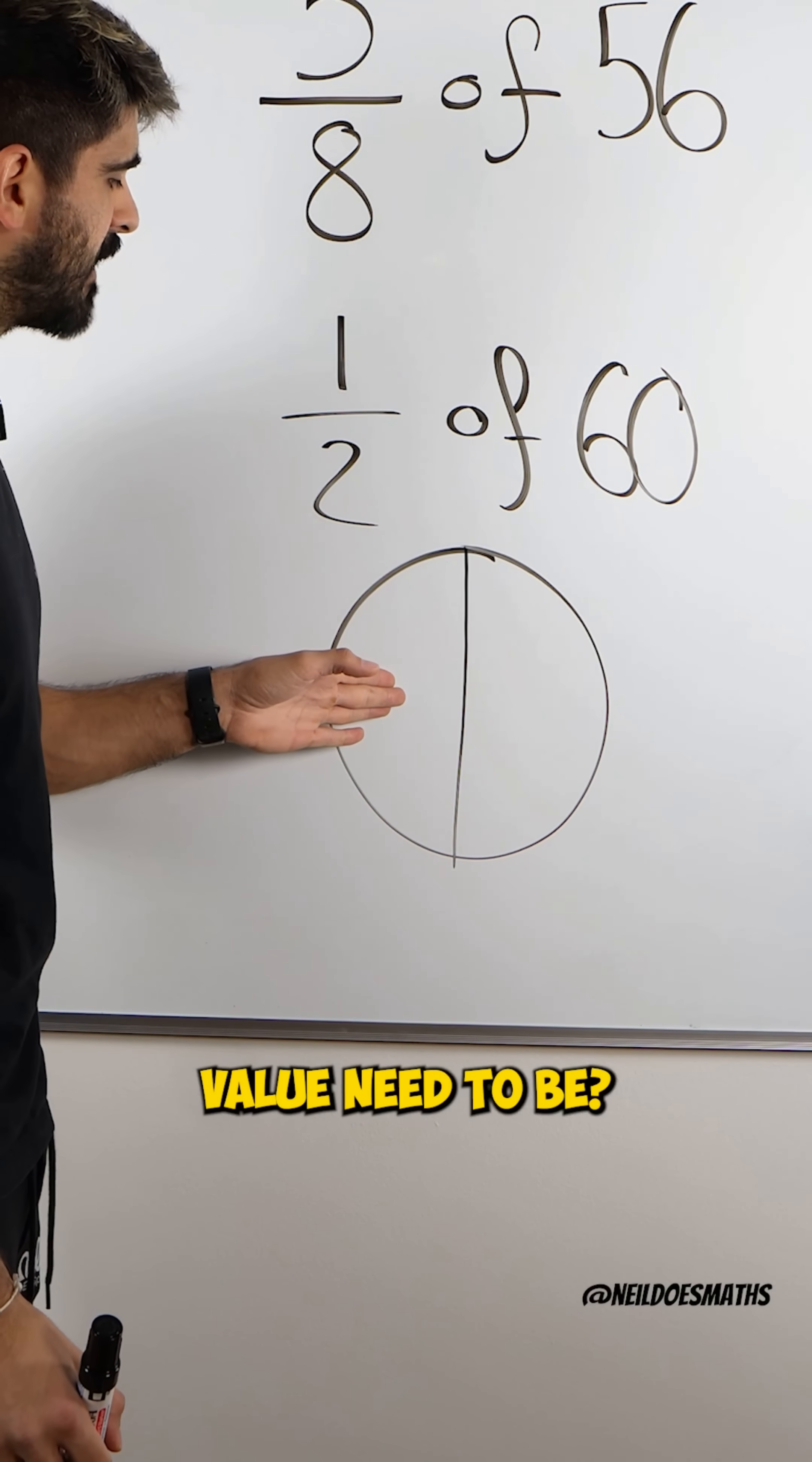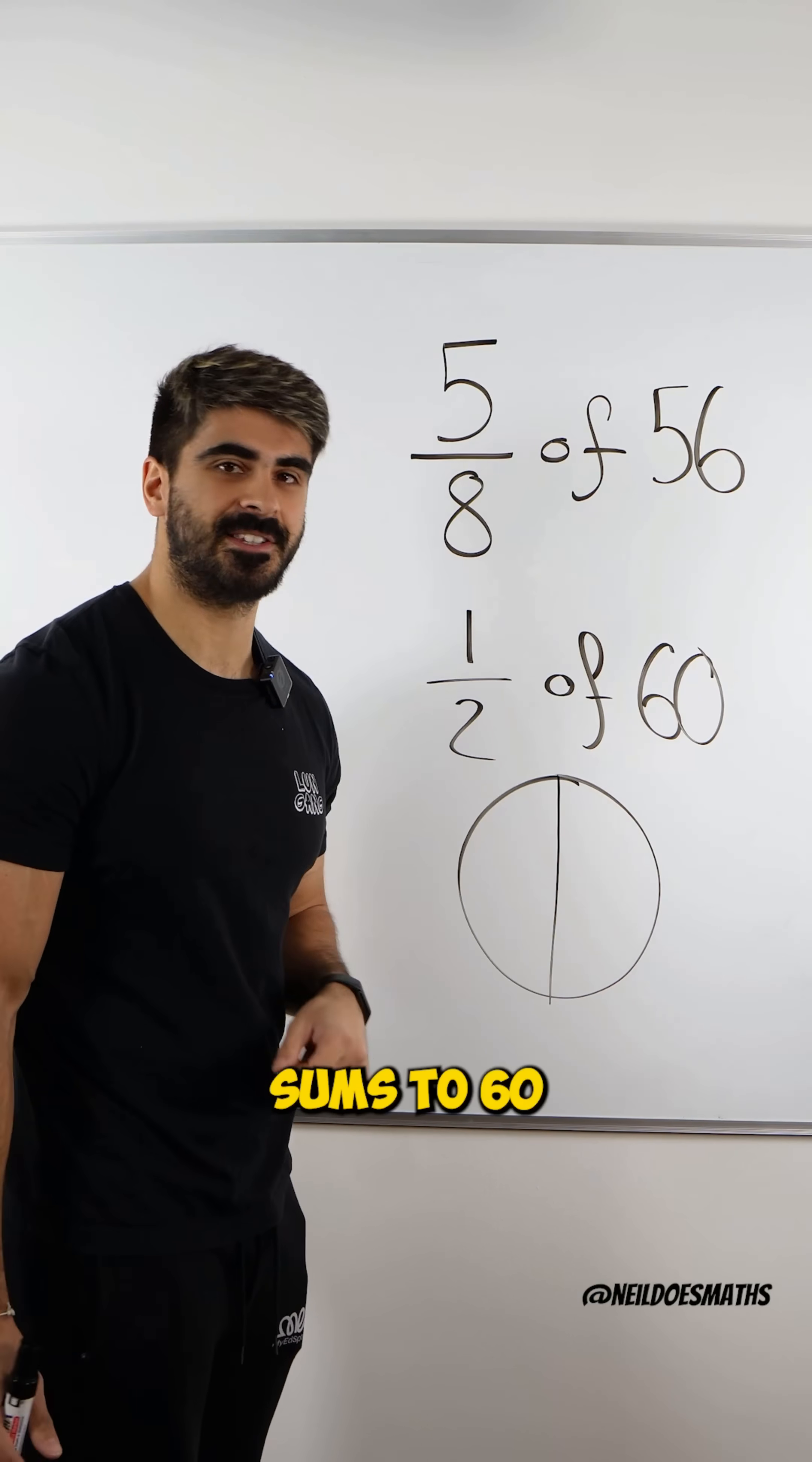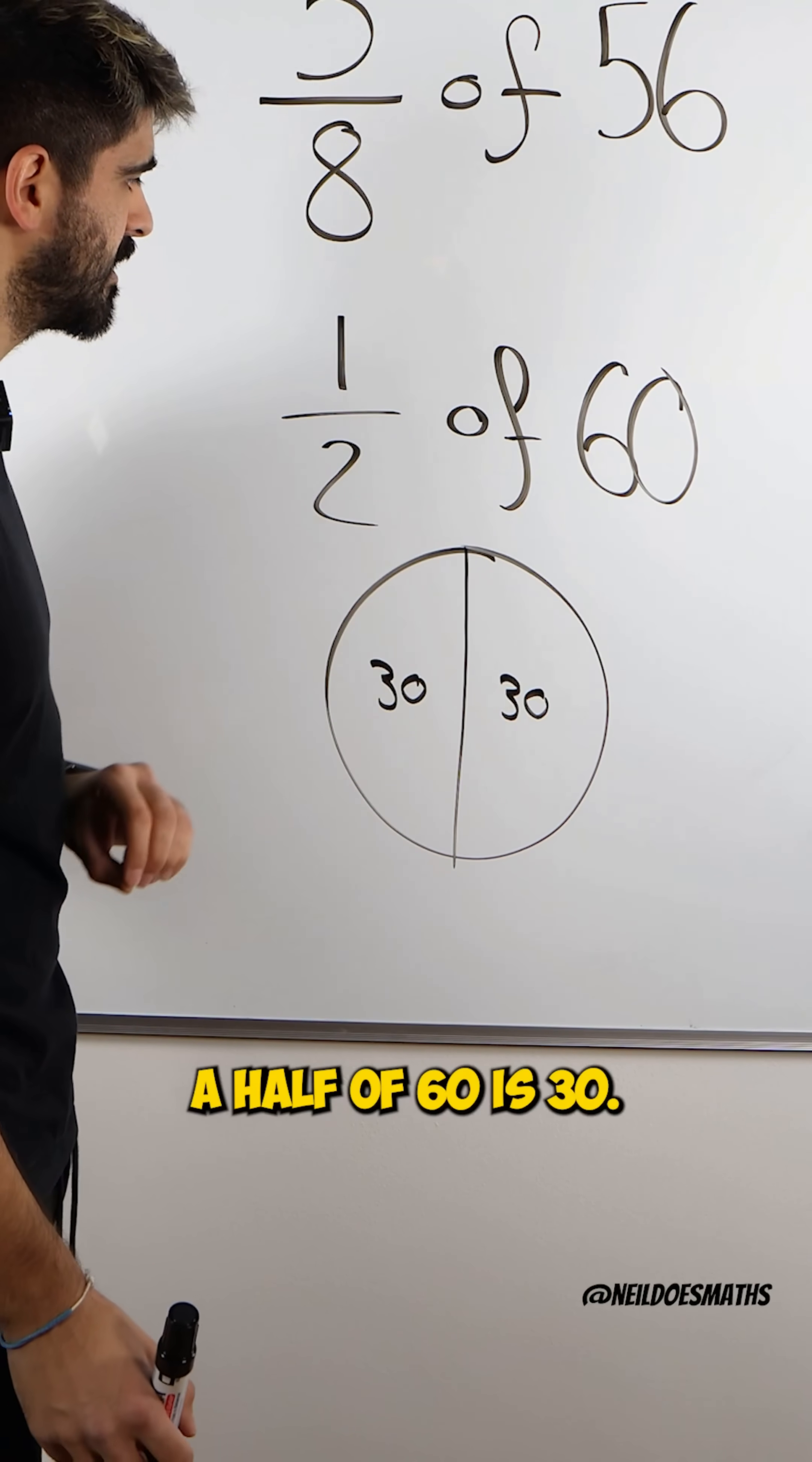All you're saying is, what does this value need to be? What does this value need to be? It sums to 60. Well, they both need to be worth 30. Okay, that's why a half of 60 is 30.